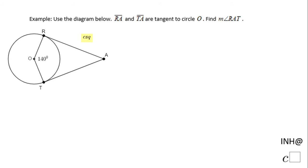Welcome or welcome back. I need help at C square. In this example we have a circle and we notice R A and T A are tangent to this circle. We need to find the measure of angle R A T.